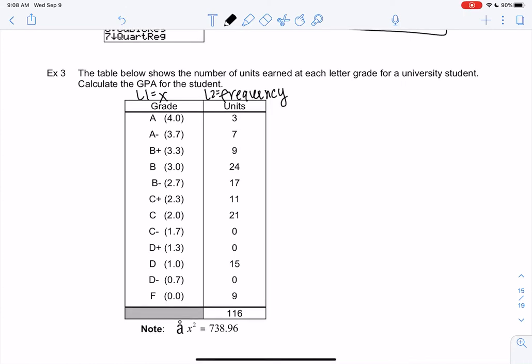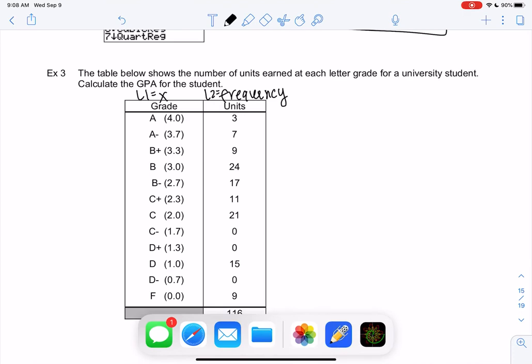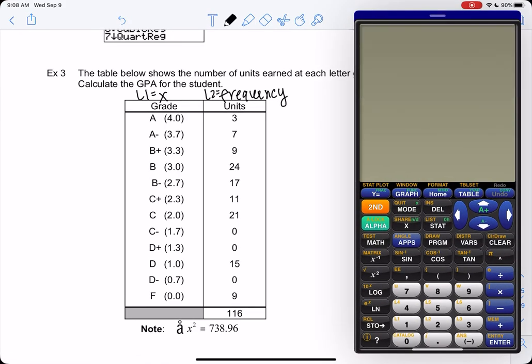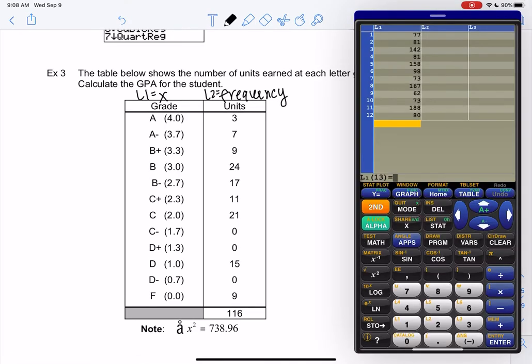And we'll find the average because grade point average is an average. So STAT EDIT, remember again you can go to the top, CLEAR ENTER, and we'll type all of the grades. So even if it has a frequency of zero, I'm going to type it so I don't make any errors. So I'm going to type all the grades in L1.